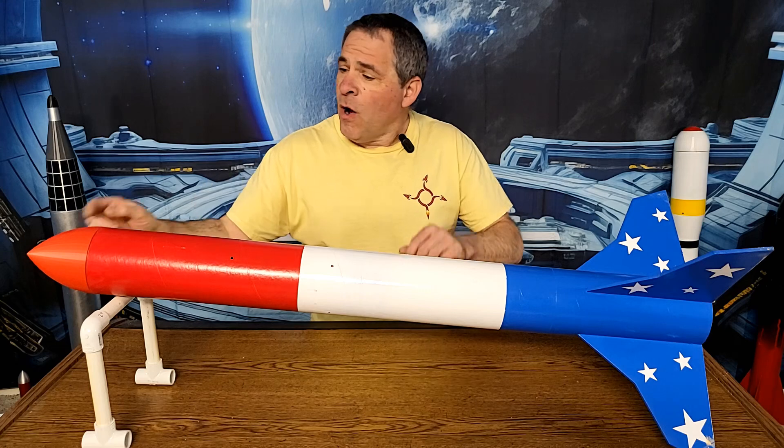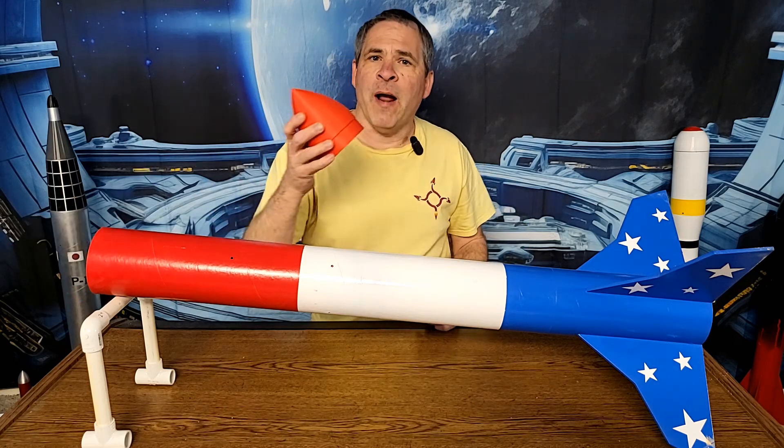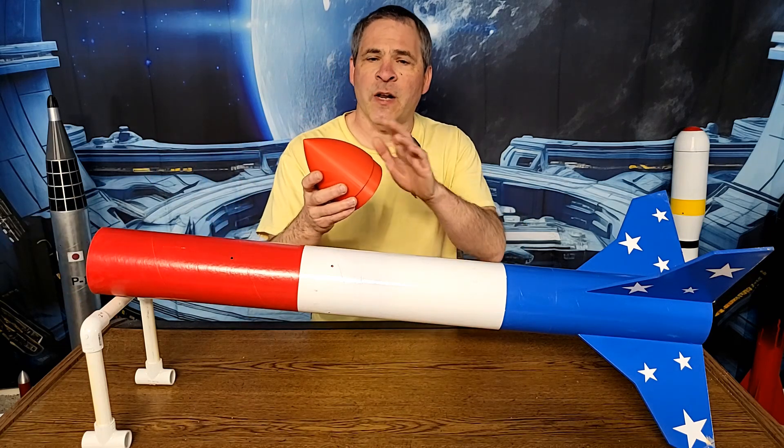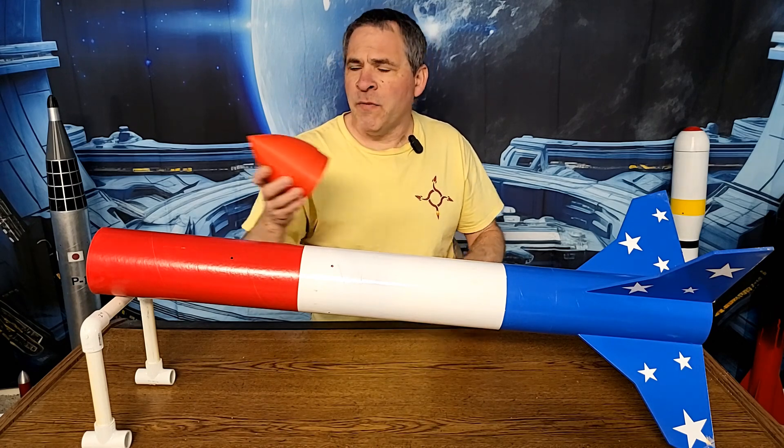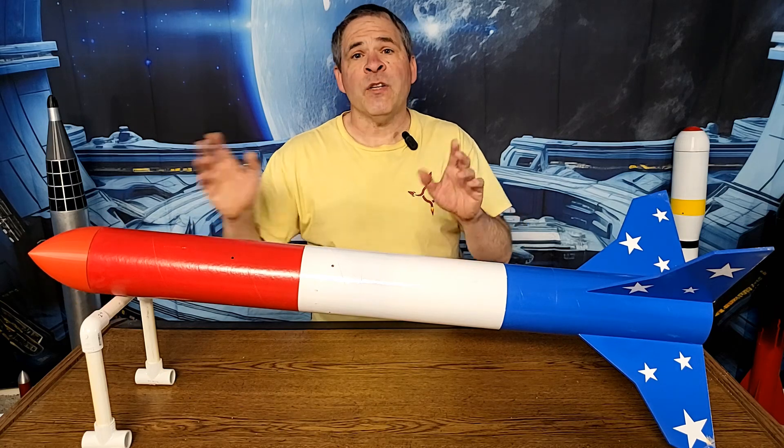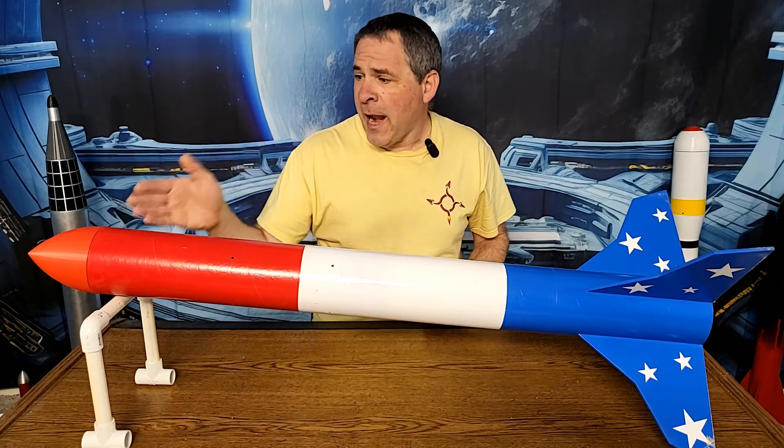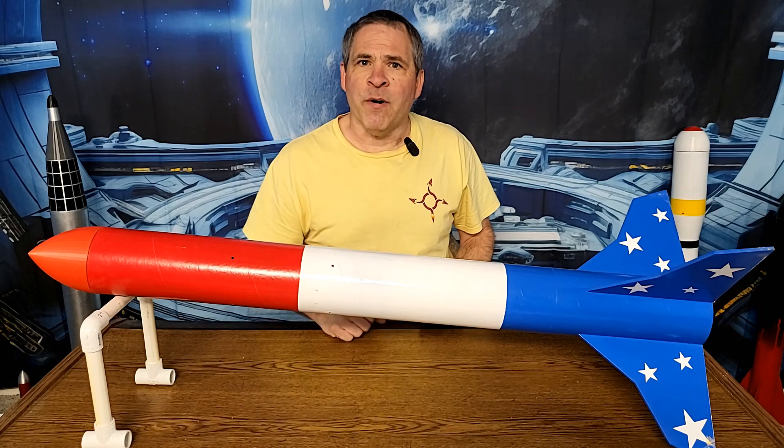And then, in our previous video, we took a detailed look at our Apogee nose cone system. This is a nose cone with a built-in electronics bay. Files for these 3D-printed parts are available on Thingiverse. There's links to the rocket build video and the nose cone video down in the description.